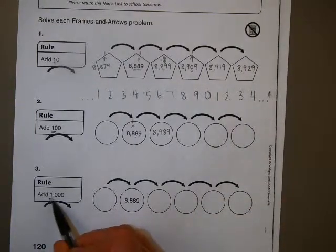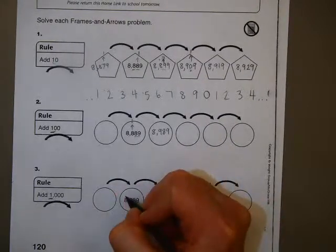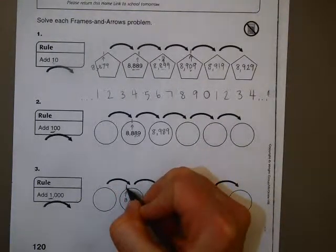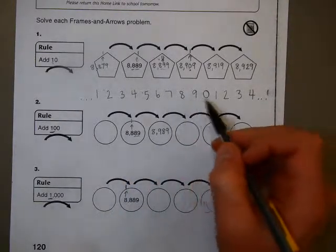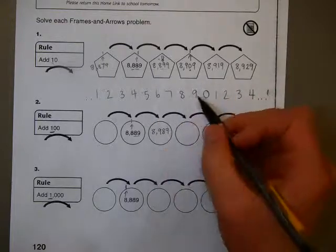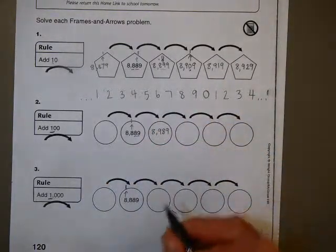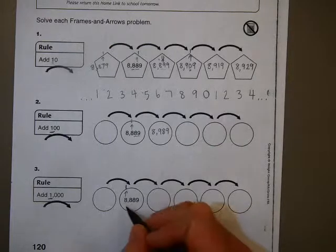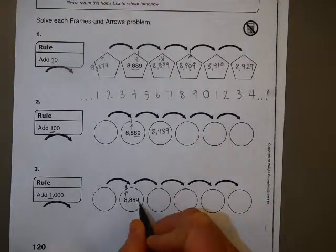And then here, this one is add 1,000. So, we're going to start in the 1,000th place. And we're going to add one from the thousands place. And it's going to be the exact same pattern. Once you get from nine to zero, you're going to have to make a new column. So, you're actually going to have five number places by the time that you're done. Right now, you have four.